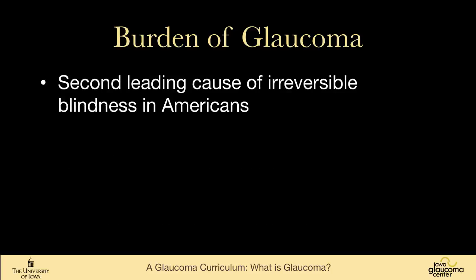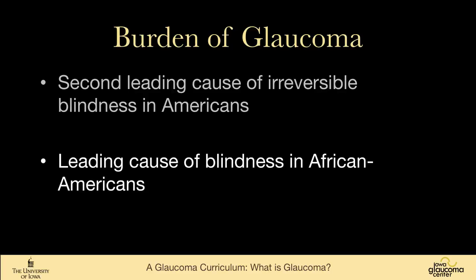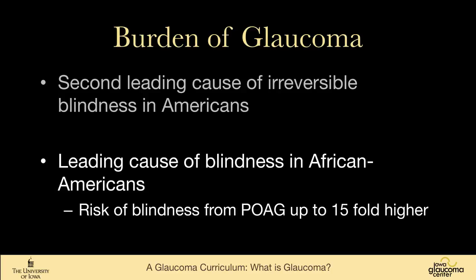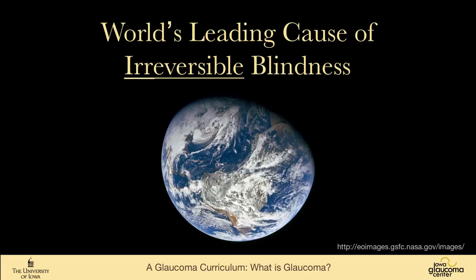Glaucoma is the second leading cause of irreversible blindness in the U.S. and most Western countries, and the leading cause of blindness in African American patients — compared to macular degeneration, which leads in white Americans. The risk of blindness from primary open-angle glaucoma in African Americans is 15-fold higher than in white Americans. It is the world's leading cause of irreversible blindness. Cataract is the leading cause of blindness globally, but that is reversible; glaucoma is not.